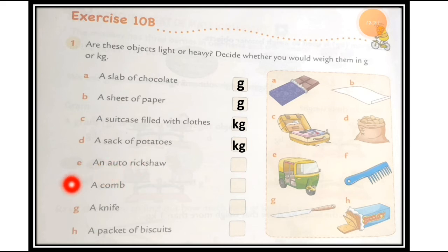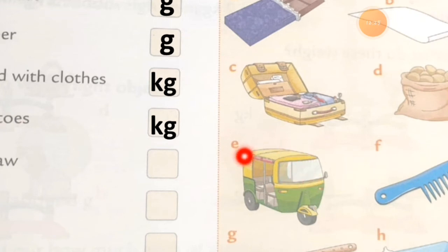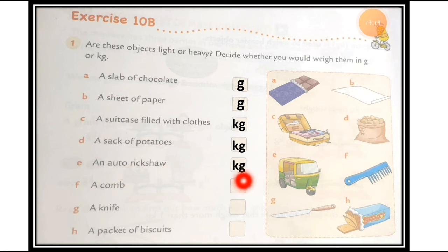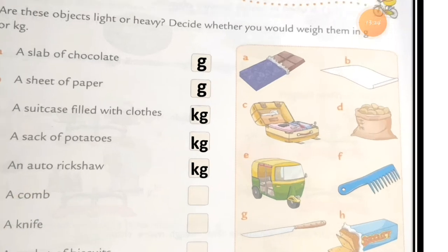Number (e): an auto rickshaw. You all know the auto rickshaw — some of you even come to school in one. The auto rickshaw is filled with many people and students. An auto rickshaw is not a light thing; it is a heavy thing. So you cannot measure it in grams — you measure an auto rickshaw in kilograms.